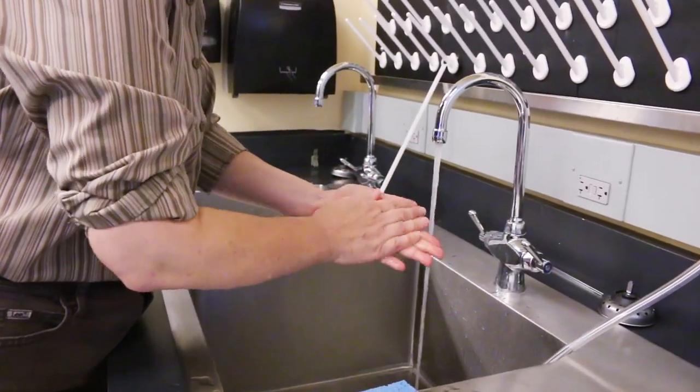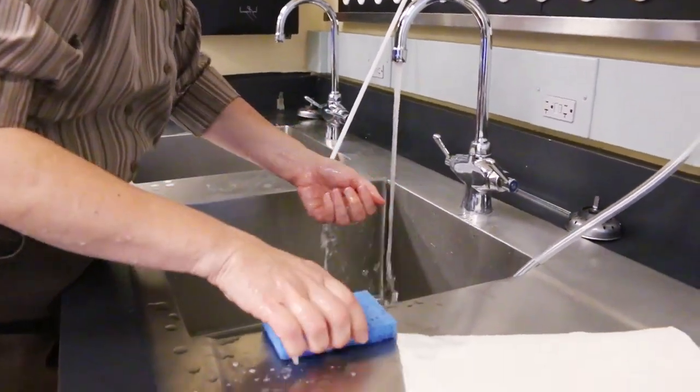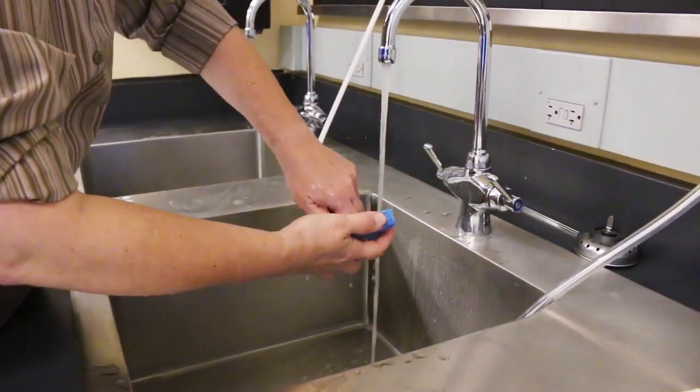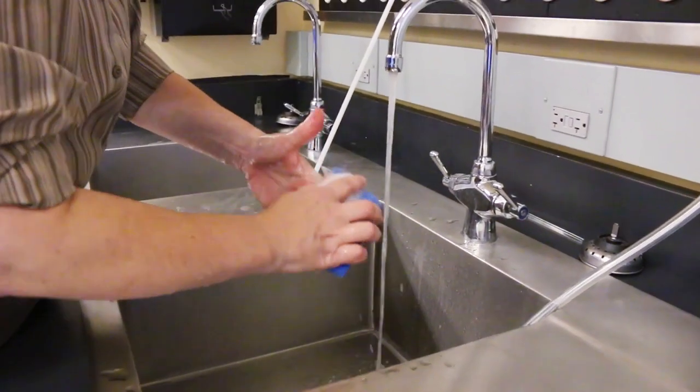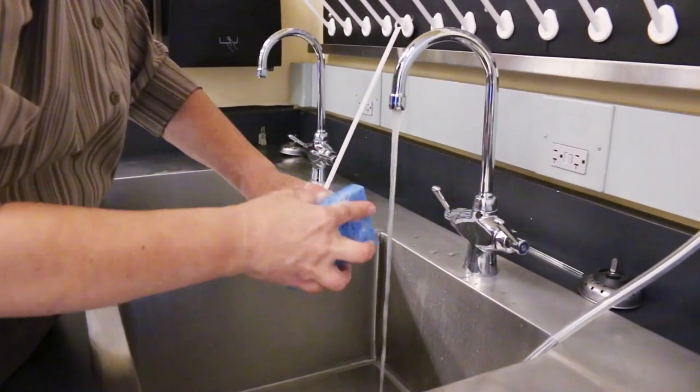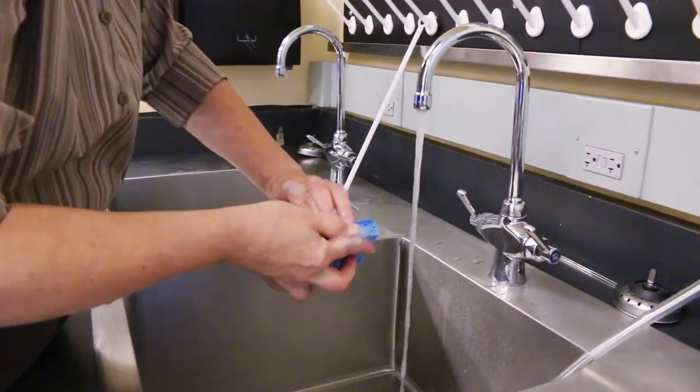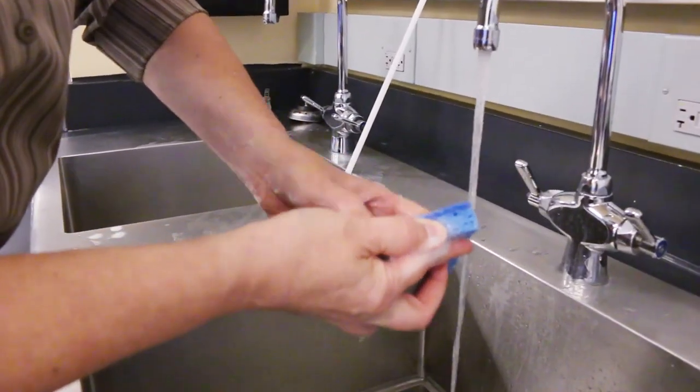Apply a small amount of water to the scrub sponge or brush. Step 12, using the brush side of the sterile scrub sponge, use that under your fingernails of your left hand moving from thumb to pinky and repeat on the other hand.